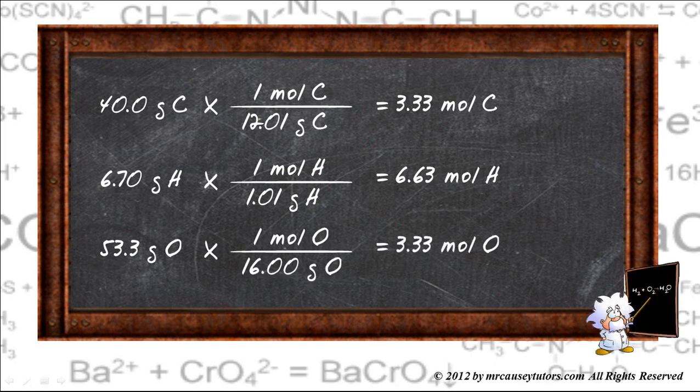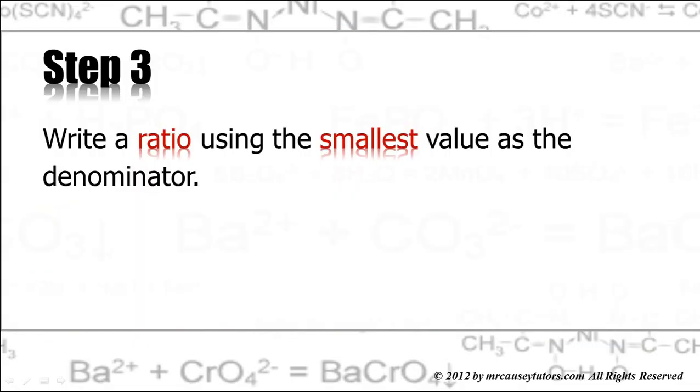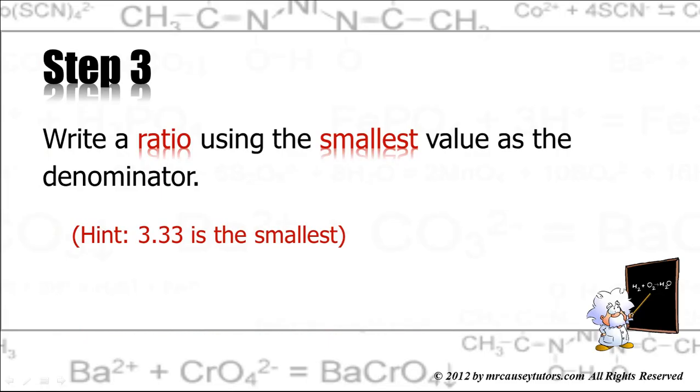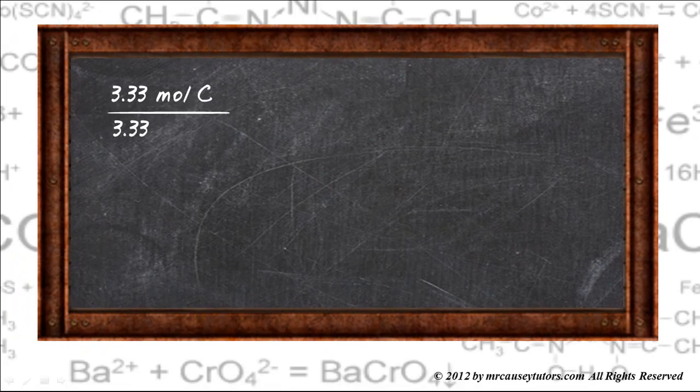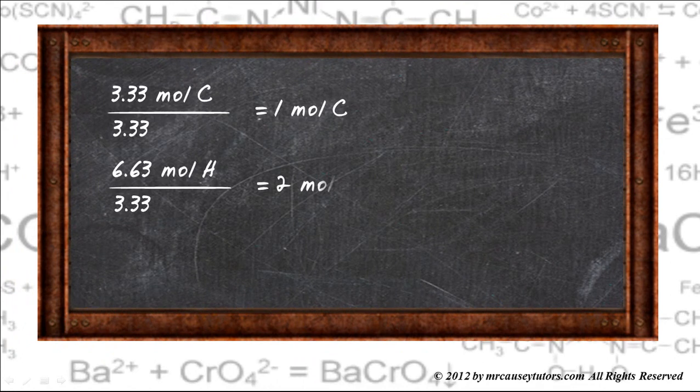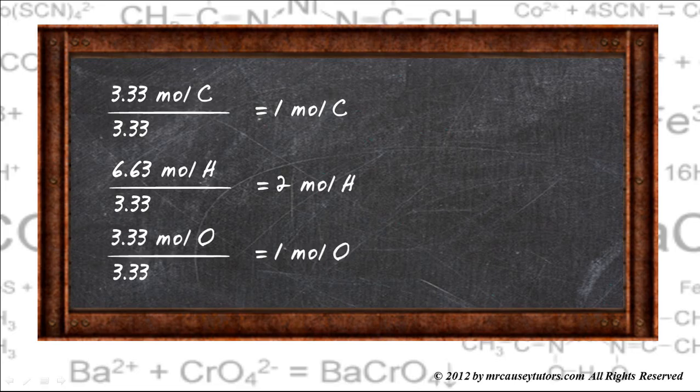So now we have our molar values, and we can use this to do step number three. In step three, we want to write a ratio using the smallest value as the denominator. And if you remember, on the blackboard, 3.33 is the smallest of the values. So let's write our ratios. Again, we knew that there are 3.33 moles of carbon. Divide that by 3.33 or 3.33 and we get one mole of carbon. Do the same thing with hydrogen.